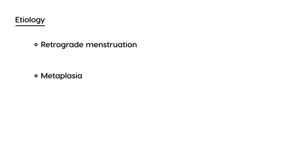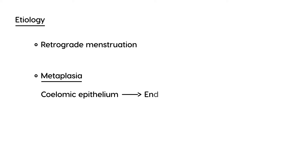The second accepted hypothesis is metaplasia — when a cell transforms from one type to another. In this case, a type of epithelium called coelomic epithelium undergoes metaplasia and transforms into endometrium-like glands at that location.